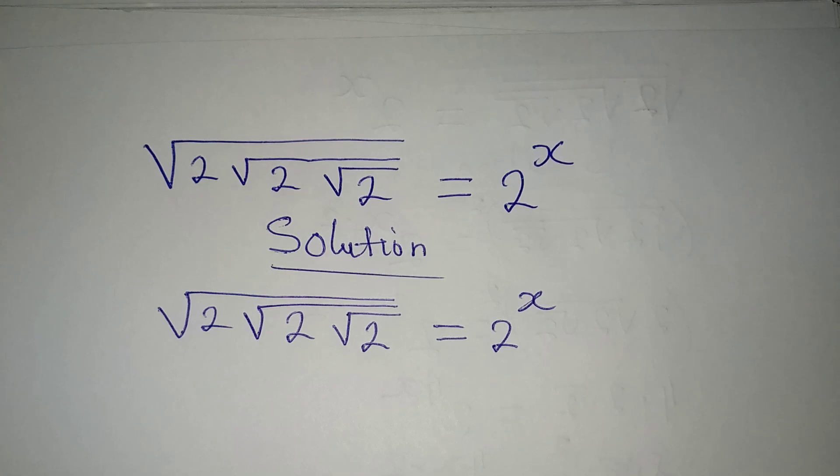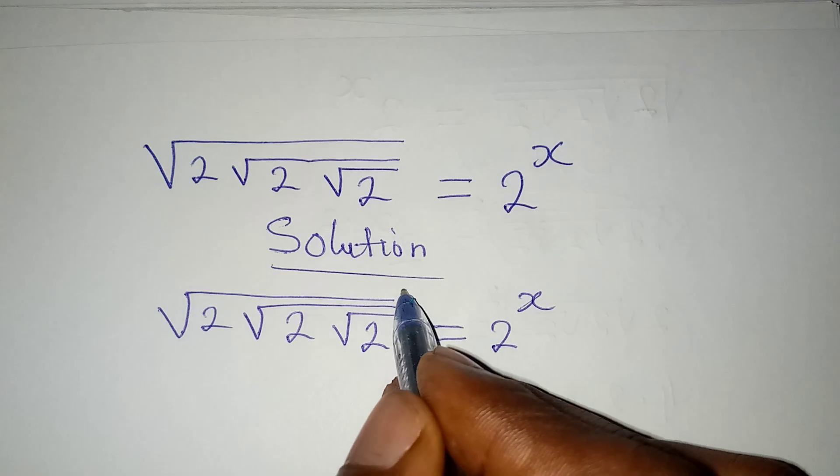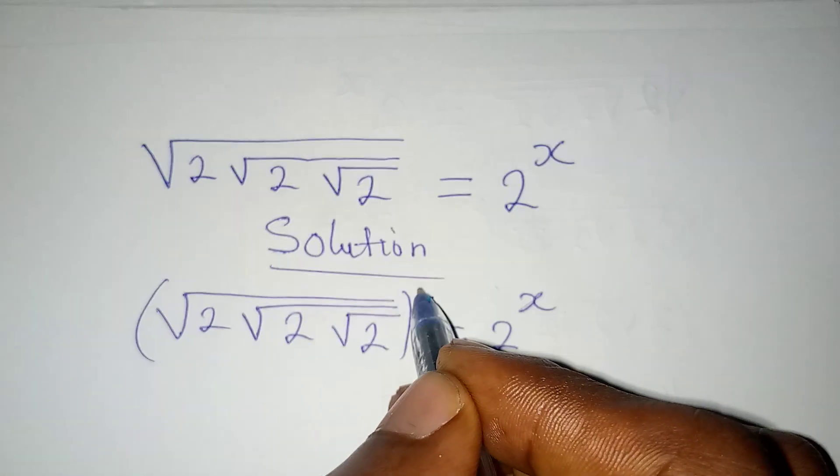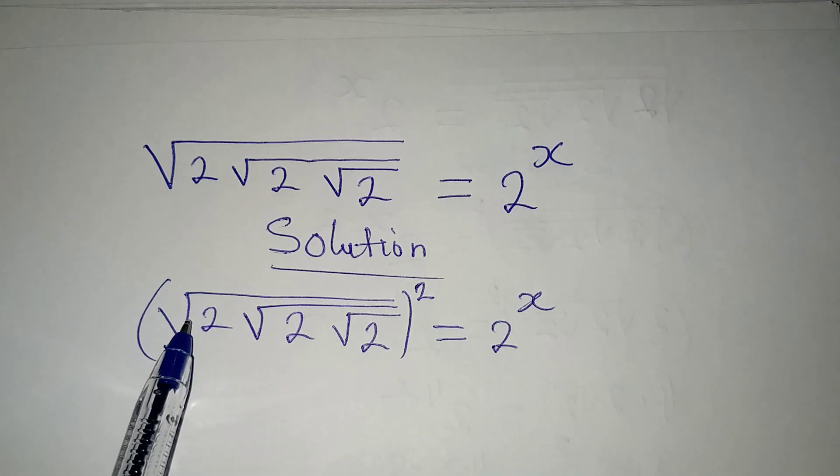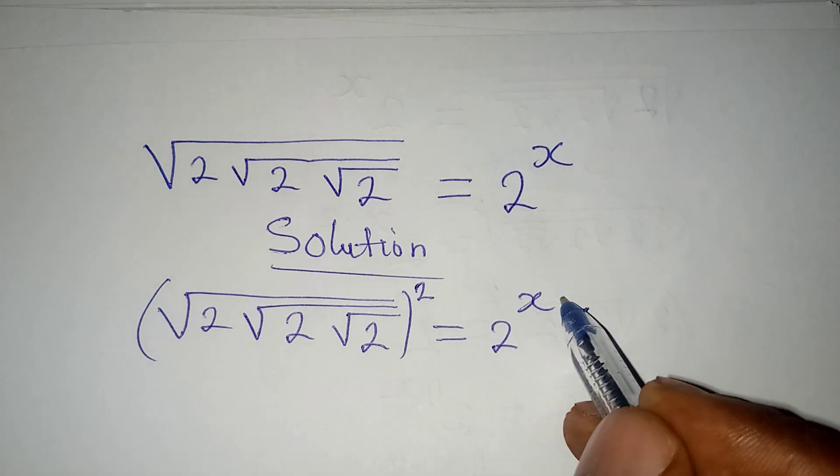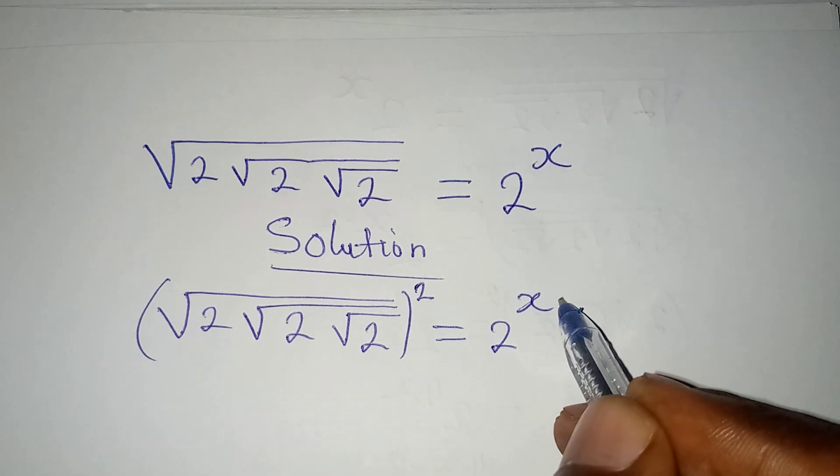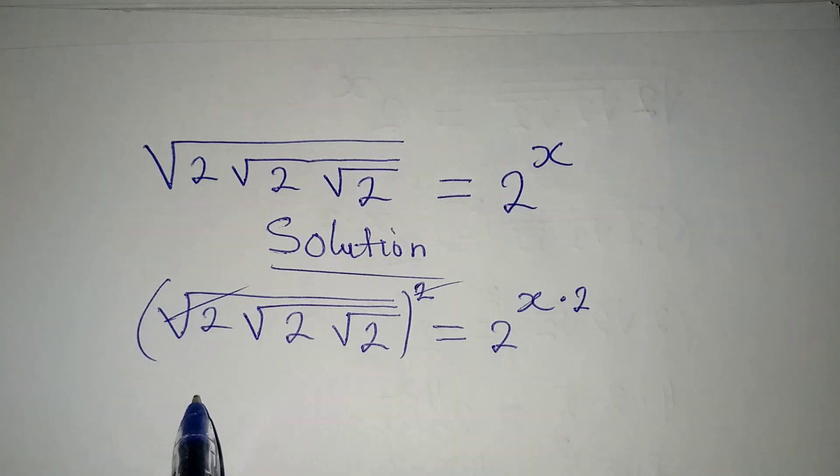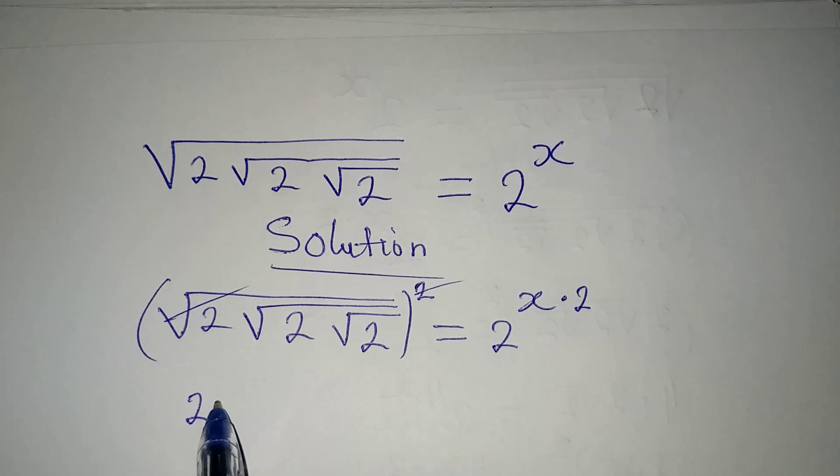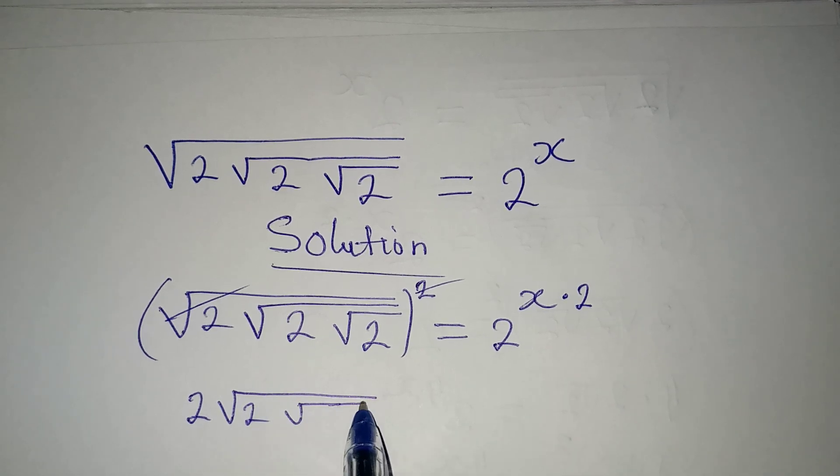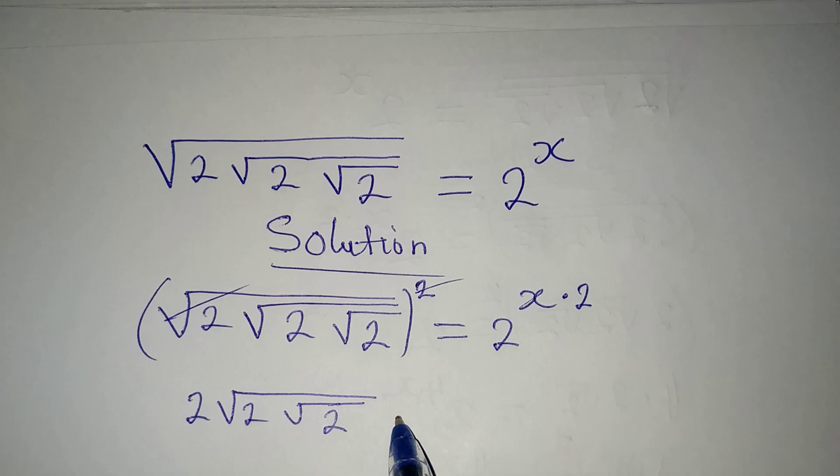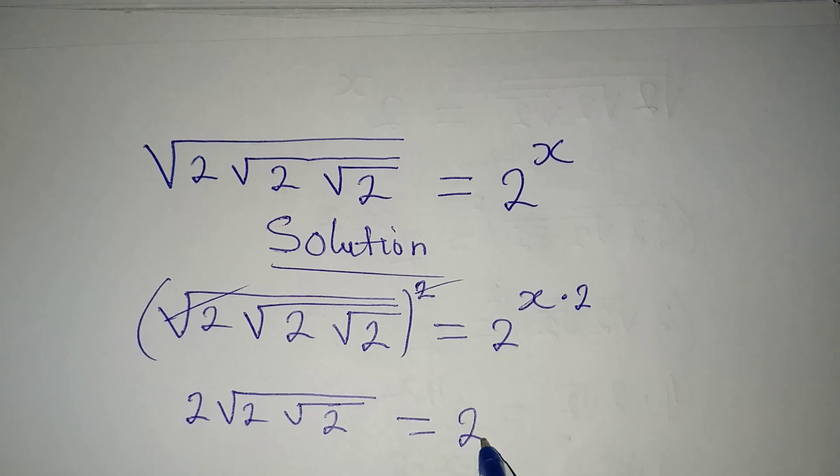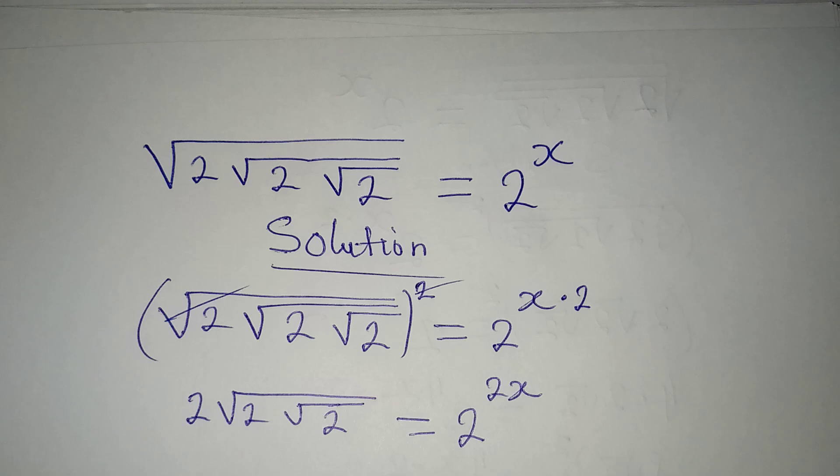Now, the first step to be taken is to square this side so that we can eliminate the first square root. Then we will multiply the power here by 2. This will cancel this. Now we have 2, then square root of 2, then square root of 2, which will be equal to 2 to the power of 2x, because I have to multiply the powers there.